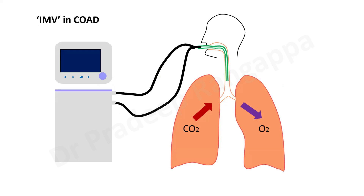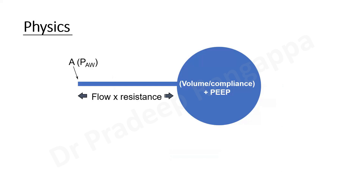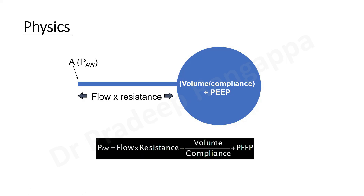In any ventilation, our whole effort is to get oxygen into the lungs and get carbon dioxide out completely. This is the whole hypothesis for understanding patients when we put them on a mechanical ventilator. The quintessence of understanding mechanical ventilation rests in understanding airflow dynamics. Airway pressure is dependent on flow and resistance in the airway, along with volume divided by compliance, plus intrinsic PEEP that keeps the alveoli open.